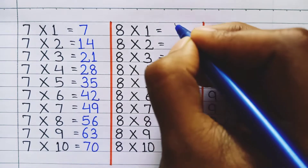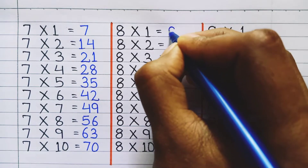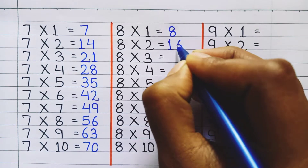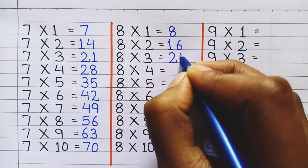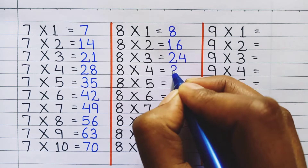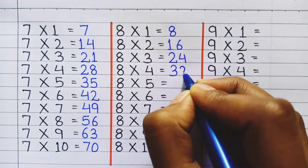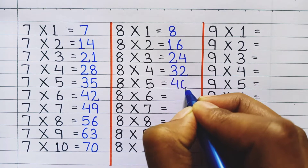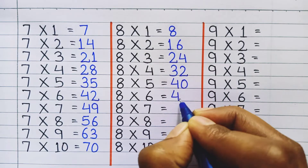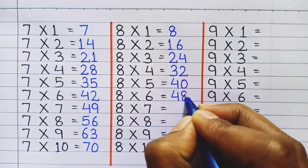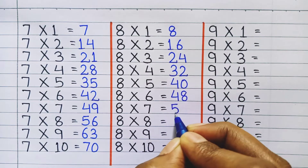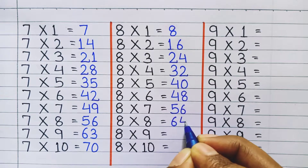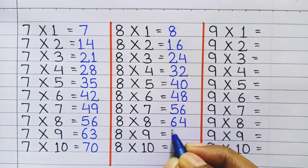Table of 8: 8 one's a 8, 8 two's a 16, 8 three's a 24, 8 four's a 32, 8 five's a 40, 8 six's a 48, 8 seven's a 56, 8 eight's a 64.